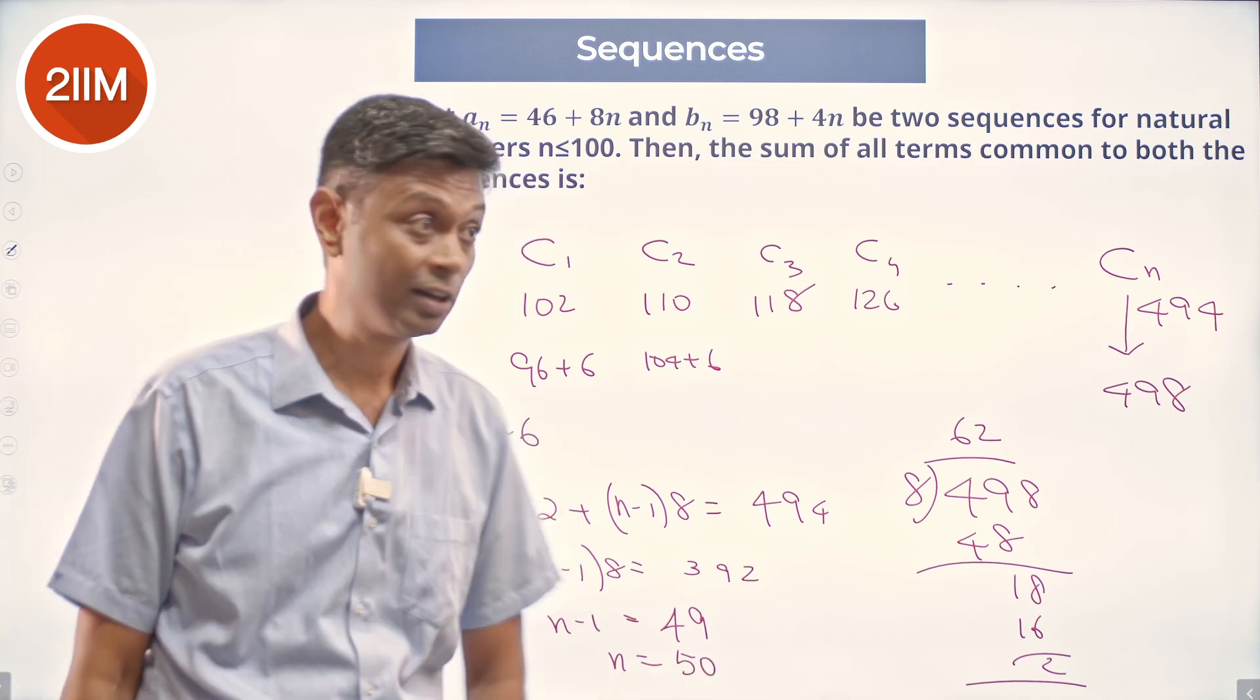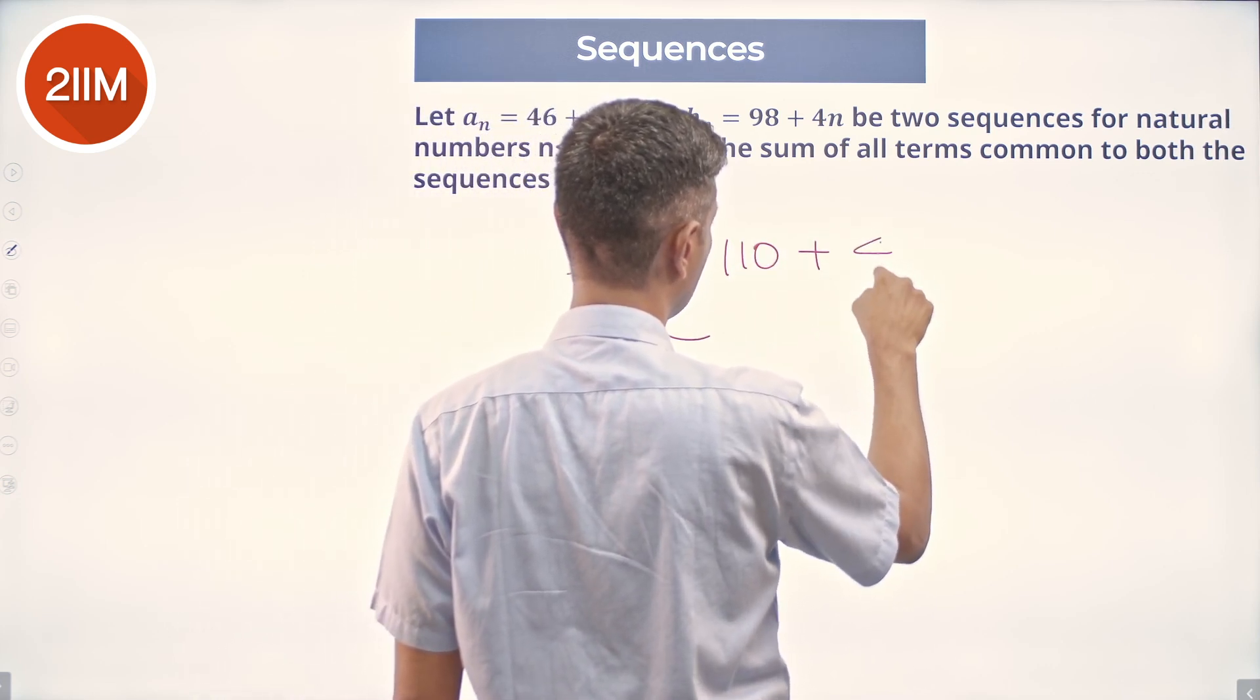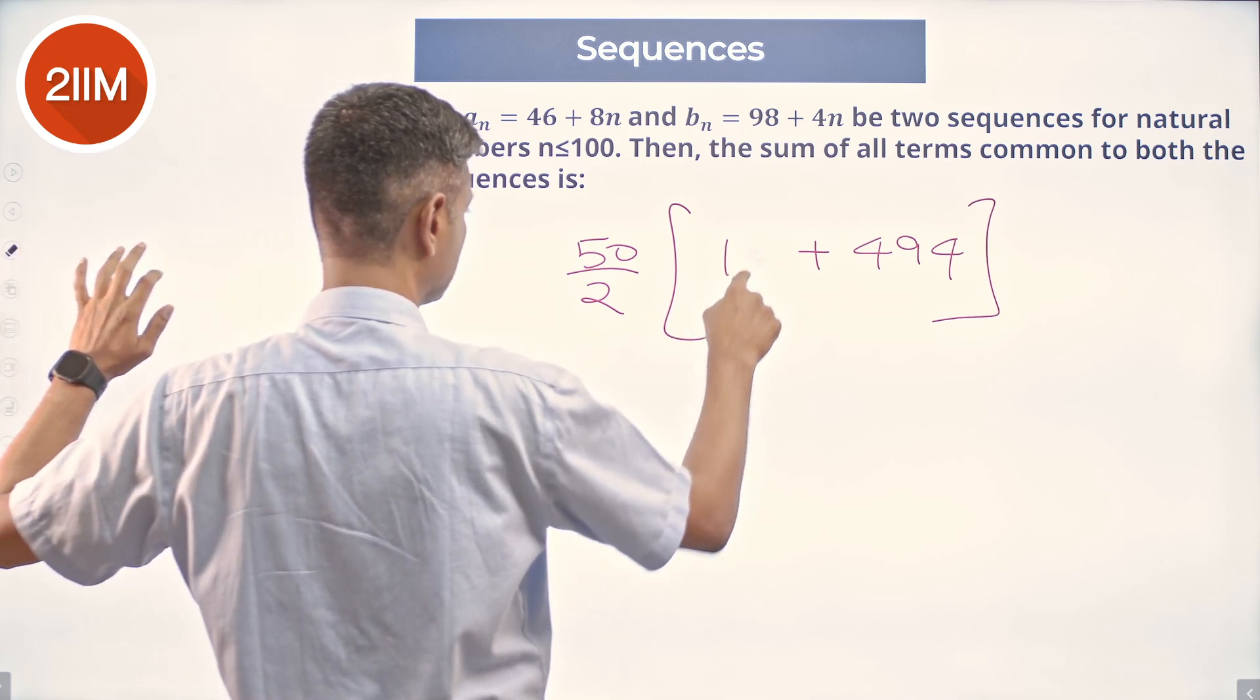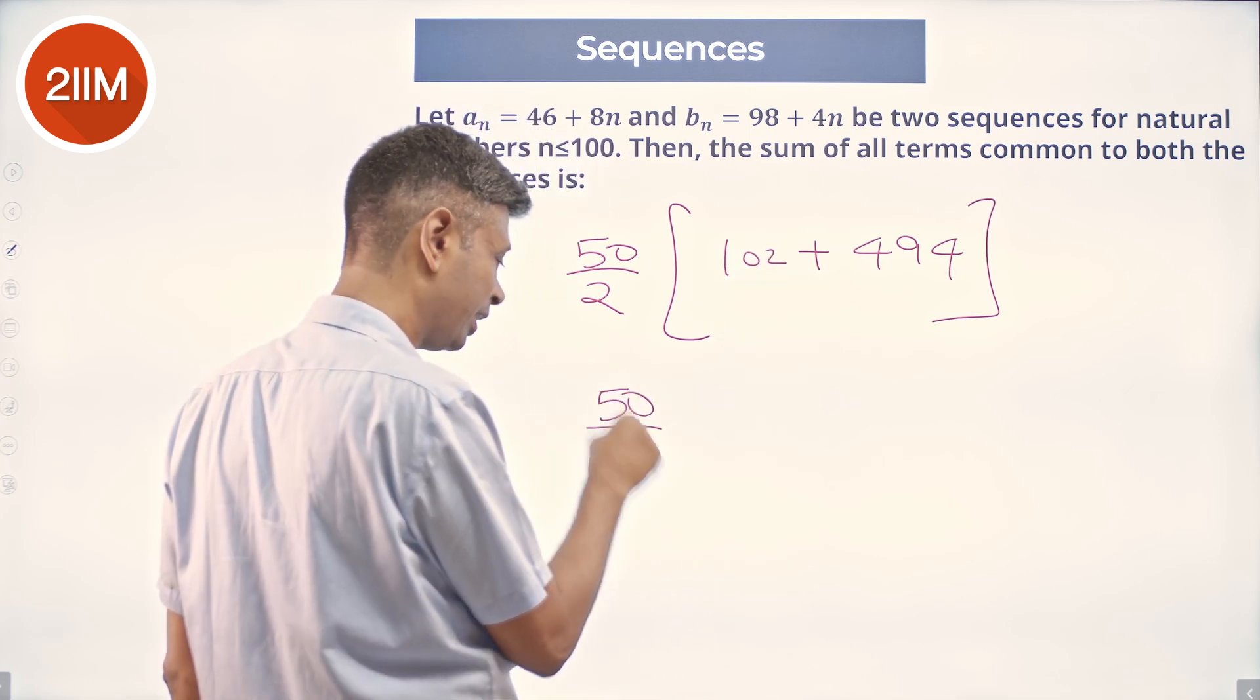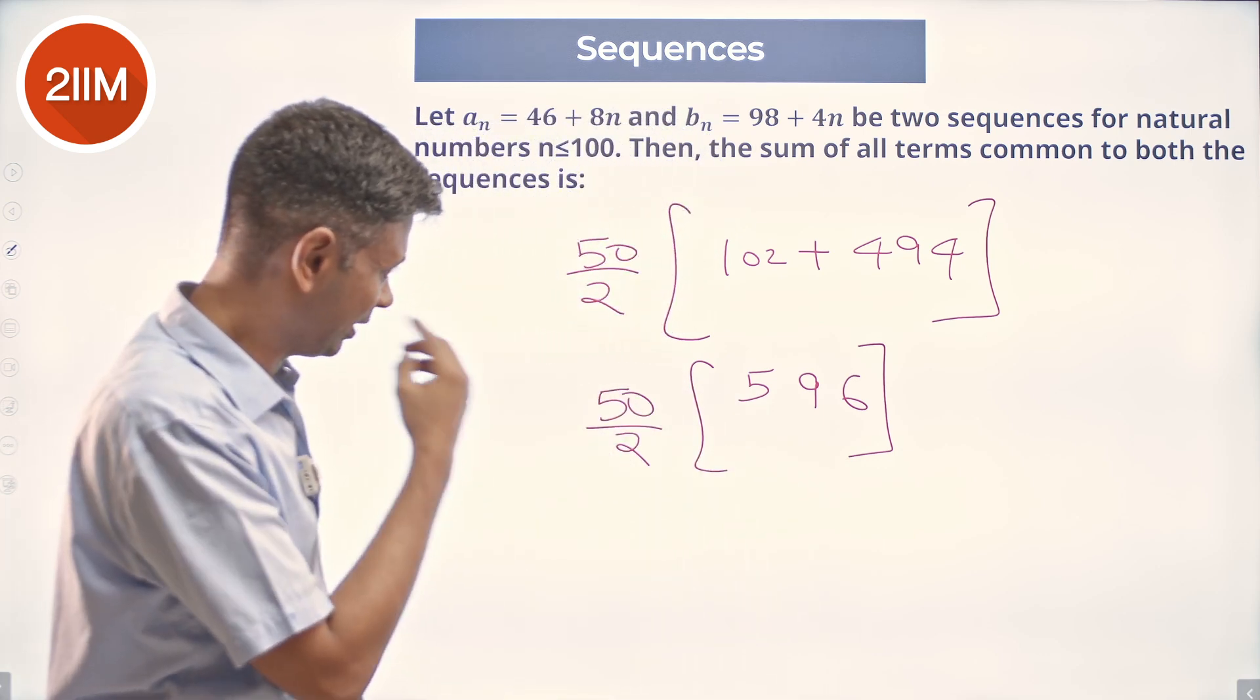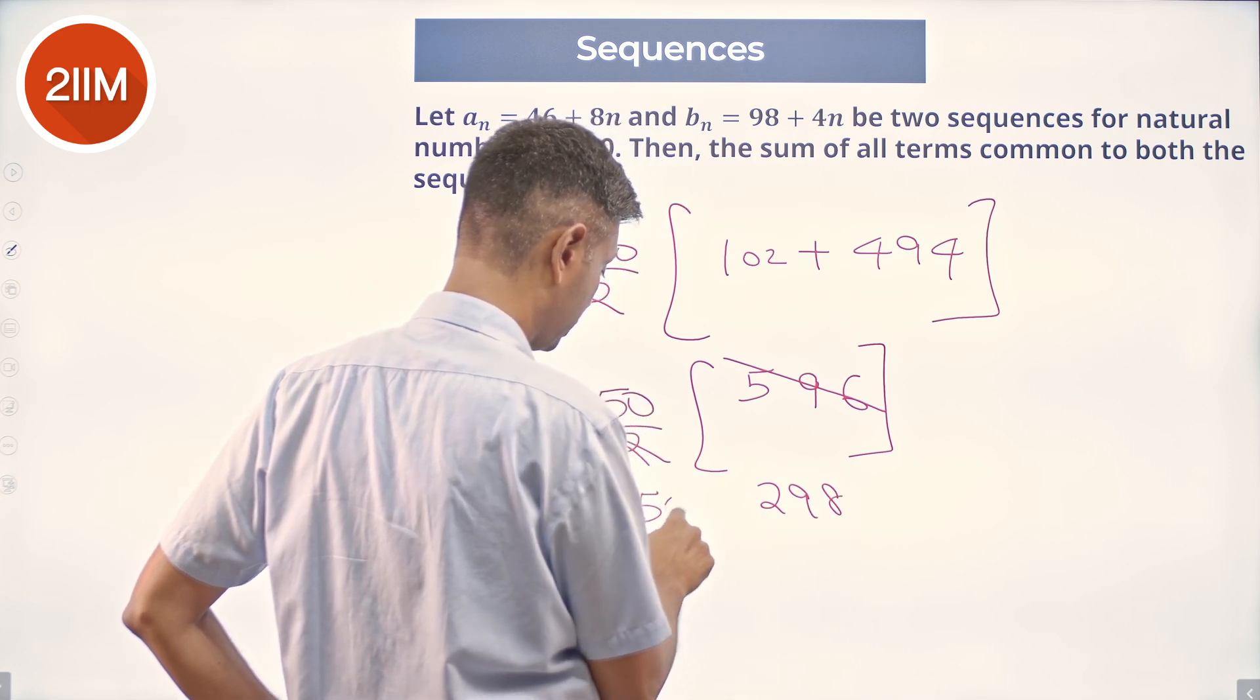50 terms common in the sequence, starting with 102, going all the way to 494. Sum of all those terms is 50 by 2 into 102 plus 494. 2 plus 4 is 6, 9 sitting here, 596. So let's divide this. 600 by 2 is 300, this is 298. 50 into 298, or 100 into 149, which is 14900.